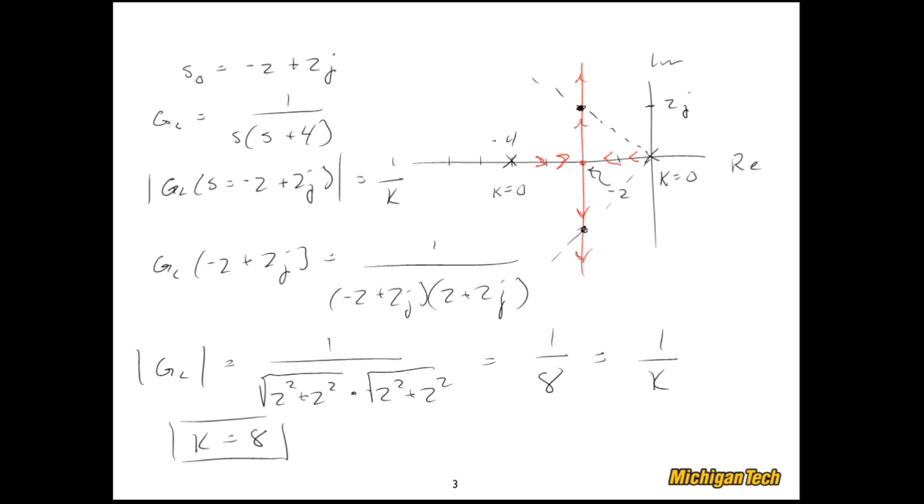And I claim that if we look at that original characteristic equation, it was a nice second order thing that looked like this. Sure enough, if we pick K equal 8, we can write this as S plus 2 squared plus 2 squared. And lo and behold, we have the real and imaginary parts of the complex poles. And we get exactly what we hoped for. Negative 2, 2j, and negative 2j.